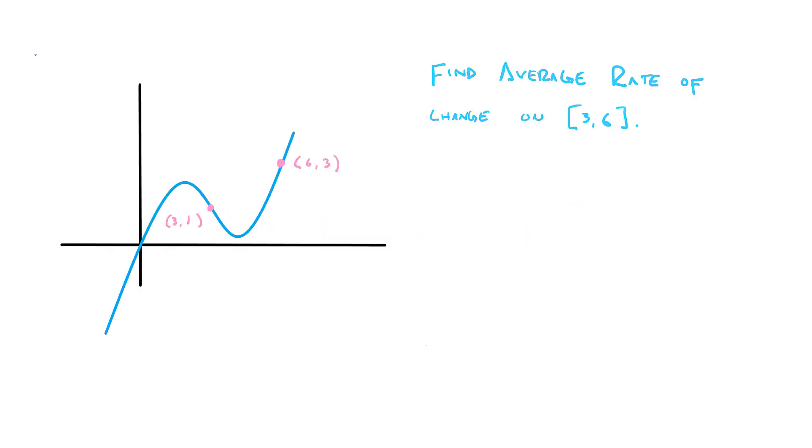Now we just finished talking about how we can find an average rate of change for a nonlinear function by essentially drawing a line between the two points we want to find an average rate of change between. So in this example, let's say we want to find the average rate of change on the interval 3 to 6. We know 3, 1 is the first point and 6, 3 is the second point, so we plug all this stuff into the slope formula and we get two thirds.